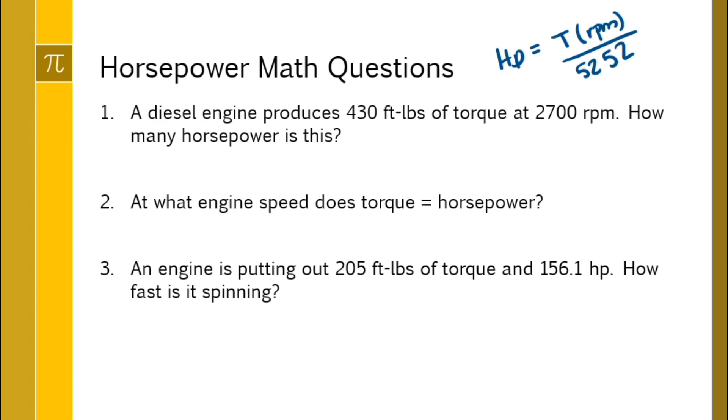We have an engine, it's going to produce 430, good strong diesel engine, 430 foot pounds of torque at 2700 RPM. How many horsepower is that? Straightforward. Horsepower equals torque times engine speed divided by 5252. You do that math, you can't really mess up the order of operations, and you should get about 221 horsepower.